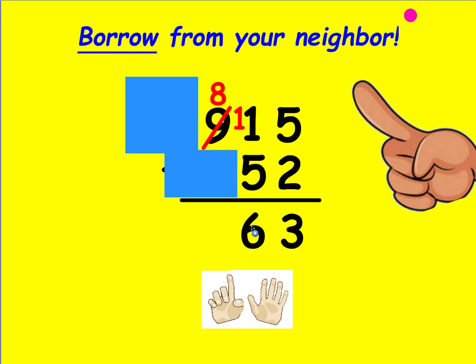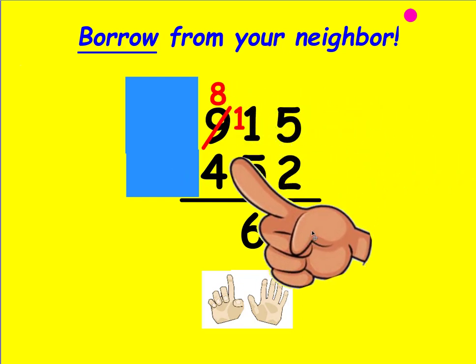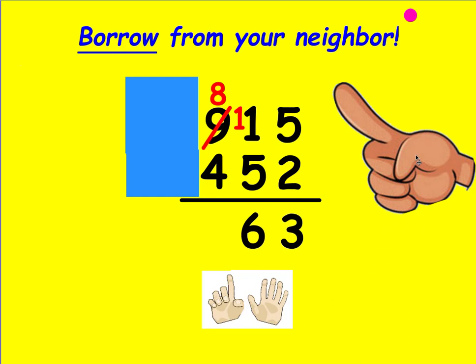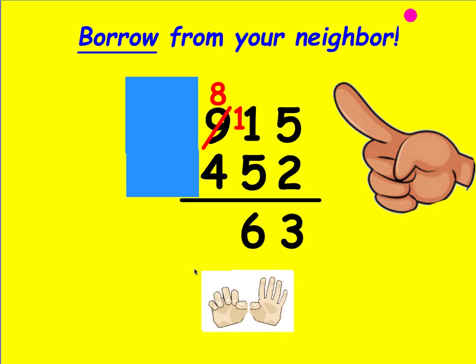Now look at the next place value — the hundreds. Can I do that? Yes, the top number is bigger than the bottom, so I can. Make your fist the bottom number, which is 4, and count up to 8: 4, 5, 6, 7, and 8. It took 4 fingers to do that.